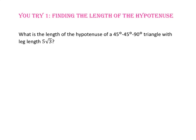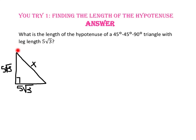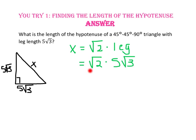Pause the video and do you-try number 1. What is the length of the hypotenuse of a 45-45-90 triangle with leg length of 5 radical 3? We know the hypotenuse is the square root of 2 times the length of the leg. Since the leg has a length of 5 times the square root of 3, we substitute that in. The square root of 2 times the square root of 3 is the square root of 6, so the hypotenuse equals 5 radical 6.